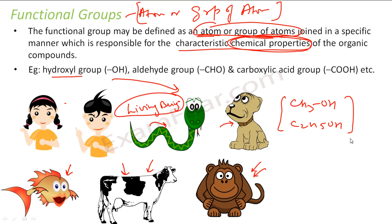Similarly, all alcohols will have similar properties. In the real world, each of us belongs to a functional group — a male or female functional group, a human functional group. Dogs are part of the dog functional group. In organic chemistry, if it is a hydroxyl functional group, then methyl alcohol, ethyl alcohol — all these will have similar chemical properties.